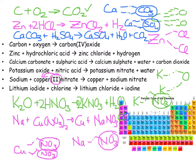Remember: get formulas first, then balance. There are 2 nitrogens in Cu(NO₃)₂ but only 1 in NaNO₃, so put a 2 in front of NaNO₃ and a 2 in front of Na. Now: 2 sodiums, 1 copper, 2 nitrogens, and 6 oxygens on each side. That is a balanced equation.